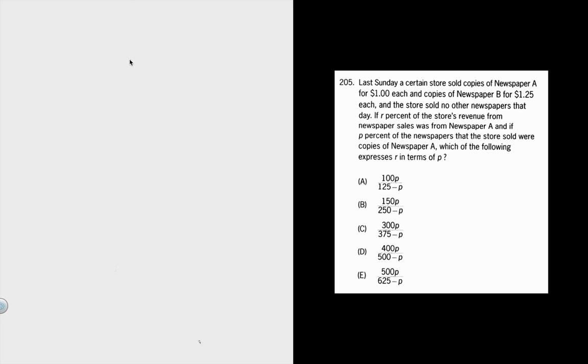It would be really smart to define those two variables. Let's start with whatever's easiest. I think p is probably the easier one—it's just the percent of copies that are A. So it's just the number of A over the total, which we can describe as the sum of A and B.